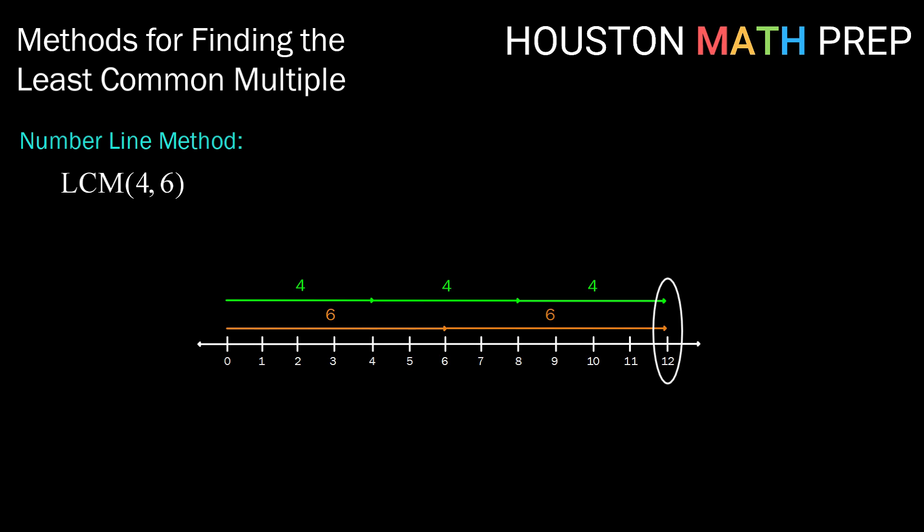In this case, our numbers line up at 12, which means that the smallest common multiple of 4 and 6 is 12. Now the number line method is a great starter for small values, but it may be rather tedious and require a lot of space if we're working with larger numbers.